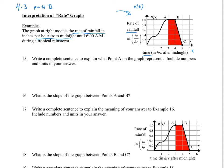So if we look at number 15, write a complete sentence to explain what point A on the graph represents, include numbers and units in your answer. So this is at 3 a.m., the rate of rainfall is one unit per time, and so that would be inches per hour, and that would be good enough.